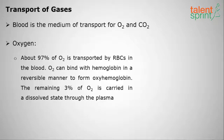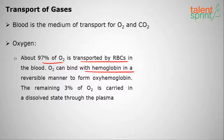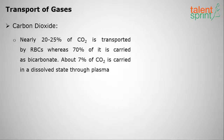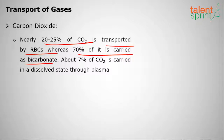For gas transport, blood is the medium for carrying O2 and CO2. About 97% of O2 is transported by red blood cells; O2 binds to hemoglobin in a reversible manner to form oxyhemoglobin. The remaining 3% of O2 is carried in dissolved state through the plasma. For carbon dioxide, nearly 20–25% is transported by RBCs, 70% is carried as bicarbonate, and 7% is carried in dissolved state through plasma.